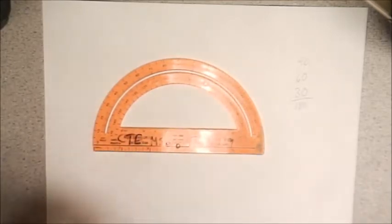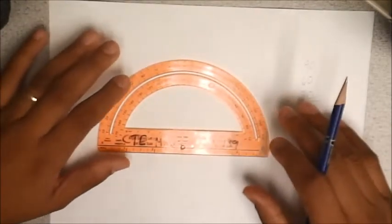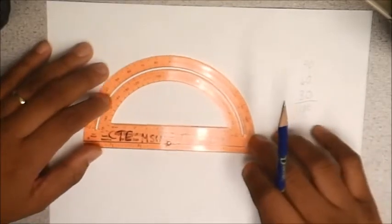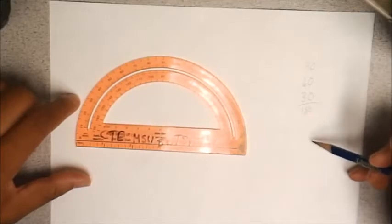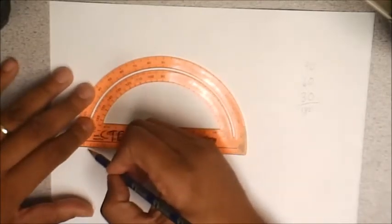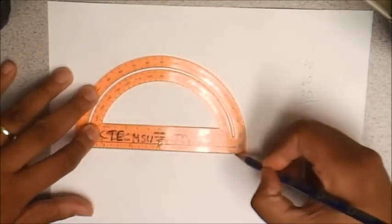So that is the protractor. So one of the things that we are going to do first is, and this steps in creating this 90, 60, 30 triangle, we are going to create, I am going to draw just a straight line.